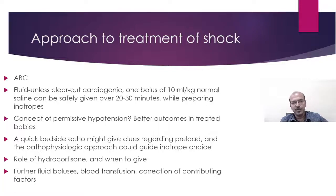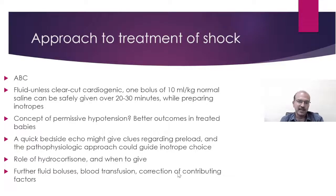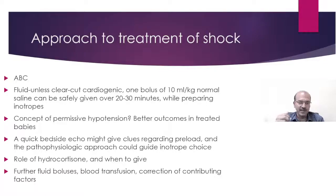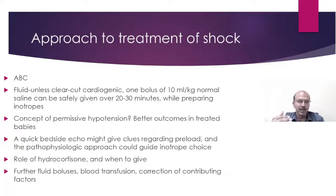Hydrocortisone is one of the medications that can be used, and the reasoning is to improve responsiveness of the newborn — especially the premature baby — to inotropes. Catecholamine responsiveness may be poor in a premature baby and the depleted receptors may be upregulated with hydrocortisone. If the baby has poor responsiveness, consider further fluid bolus, blood transfusion, and correction of contributing factors. Bicarbonate to correct acidosis is a double-edged sword; however, acidosis can affect myocardial functioning. Maintaining appropriate calcium levels and avoiding hypocalcemia, hypoglycemia, and hypothermia is important. If a baby on therapeutic hypothermia has persisting hypotension, aborting cooling and rewarming quickly may need to be considered.